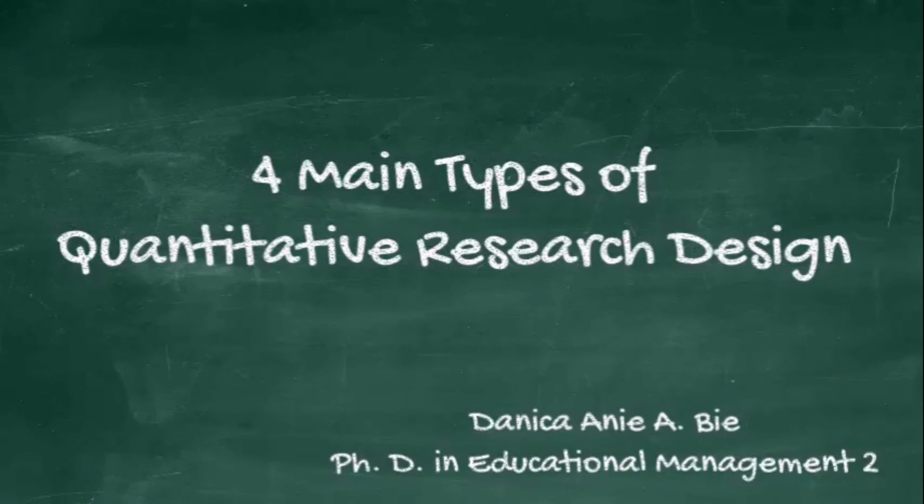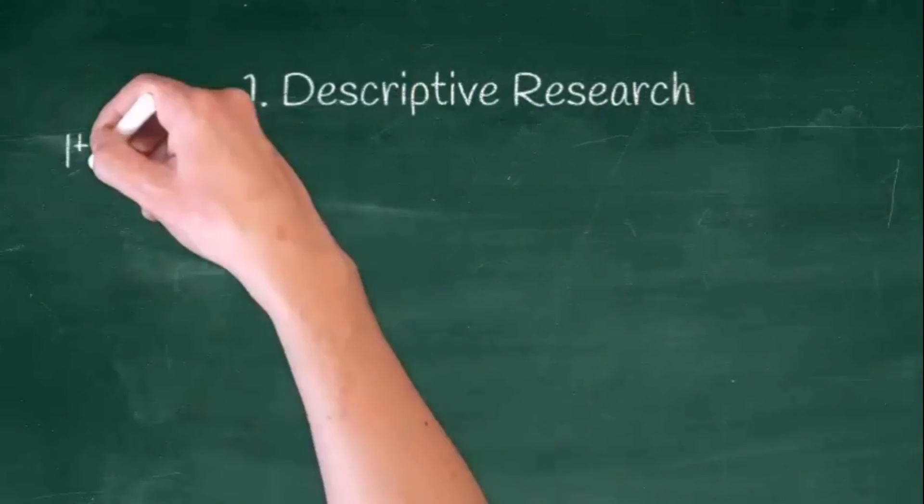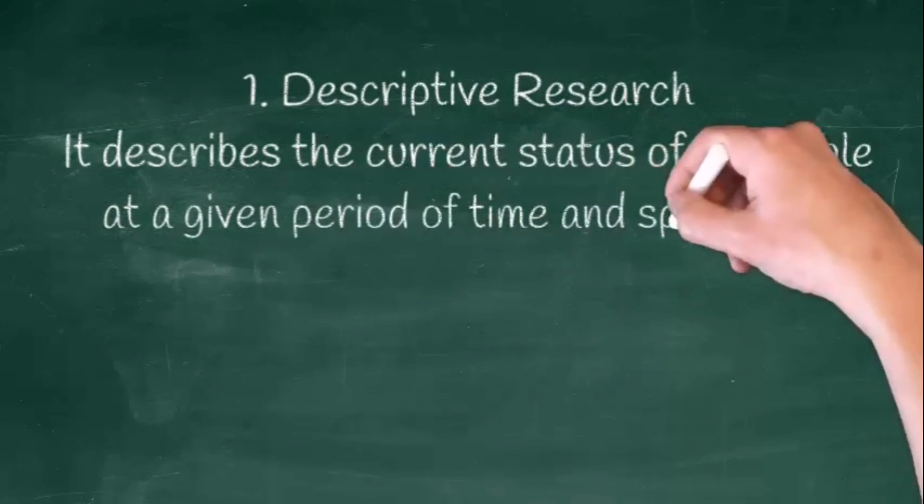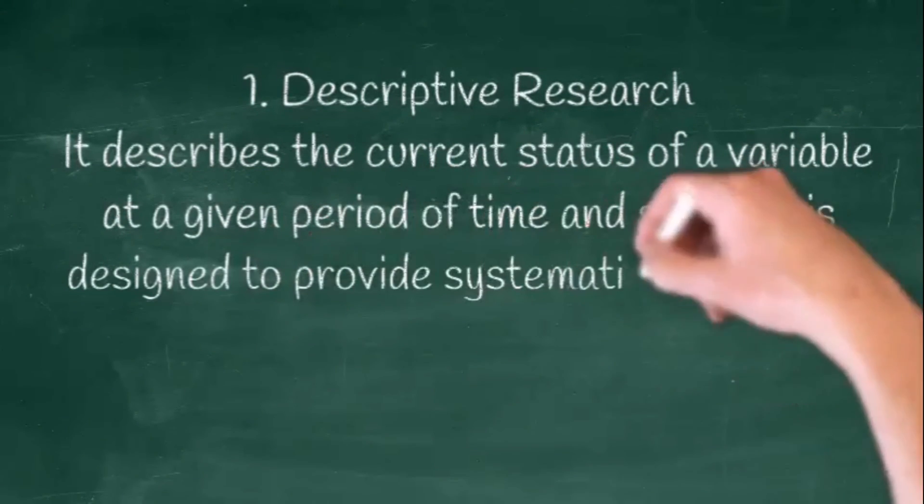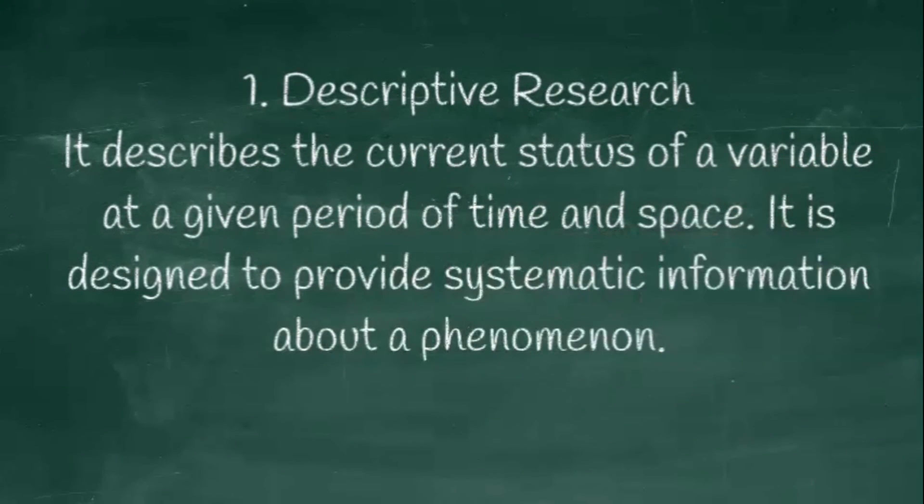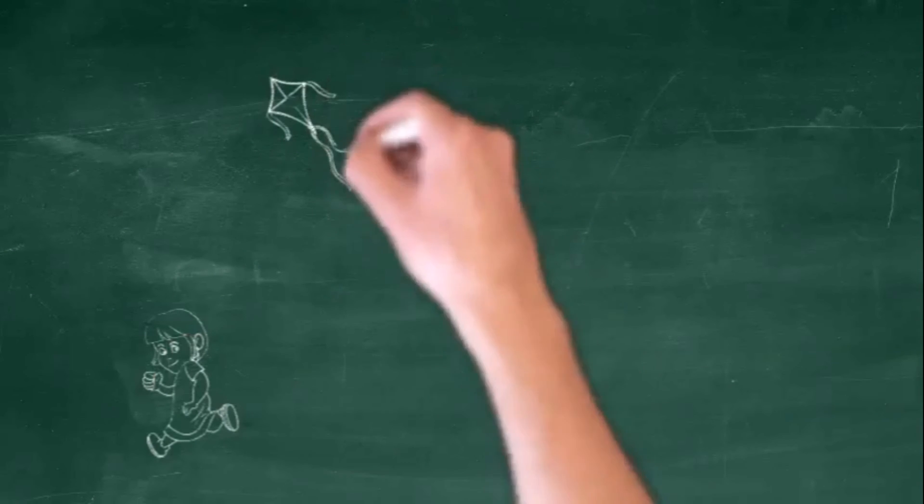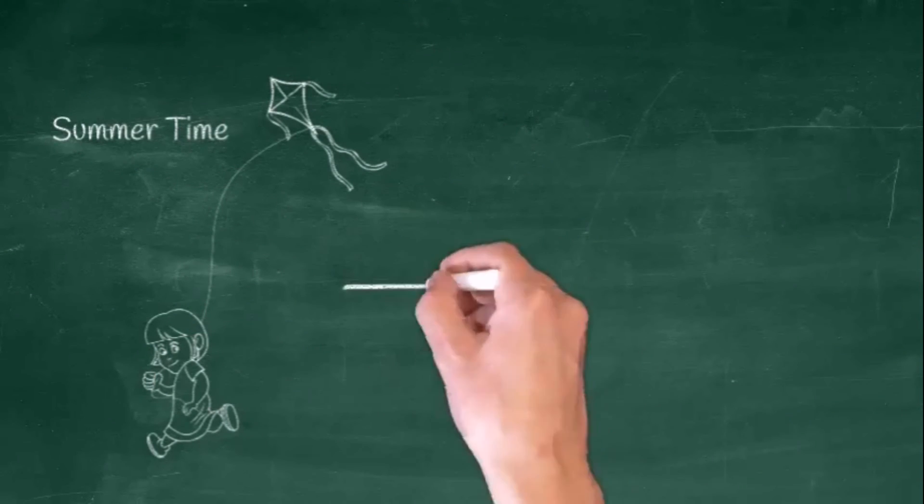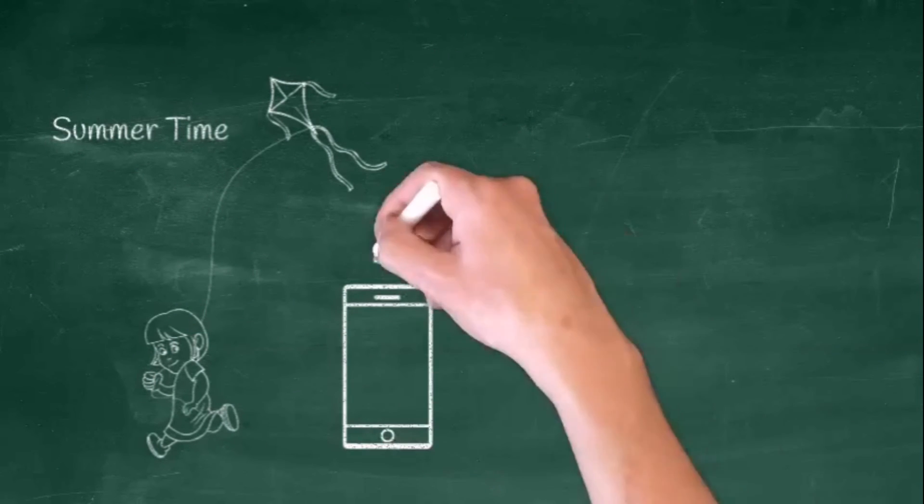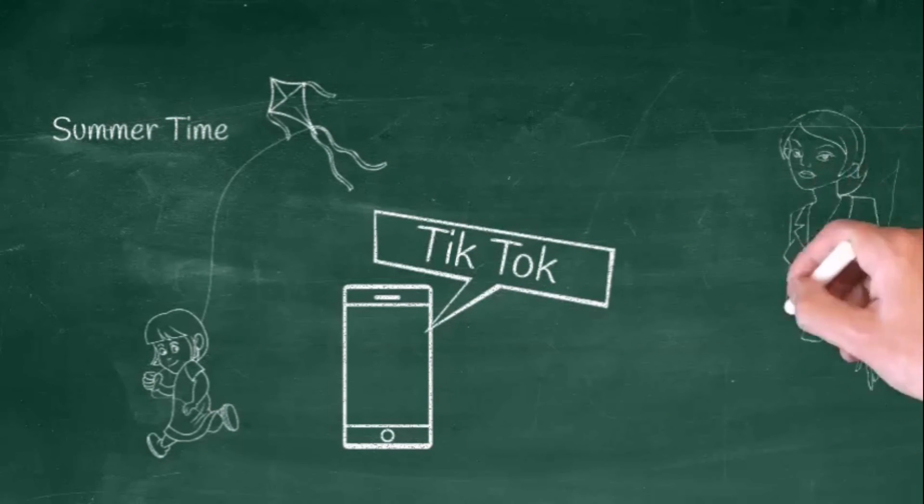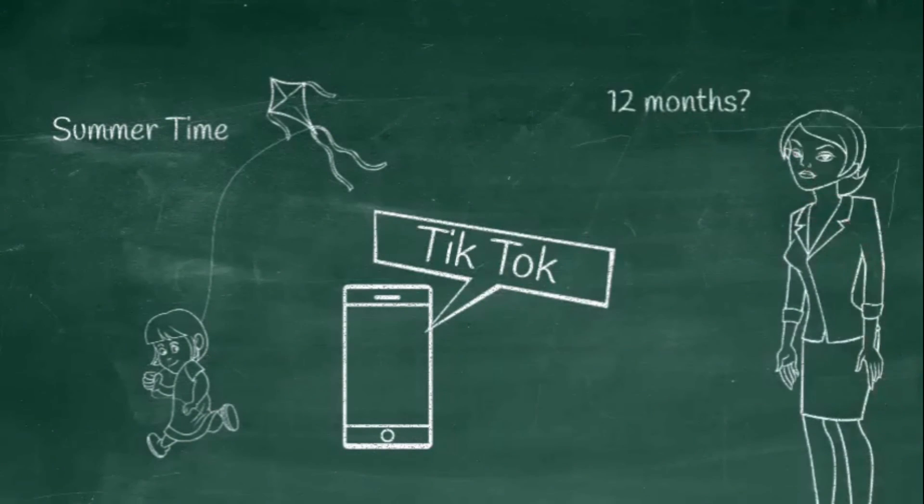For research designs in a quantitative method, first we have descriptive research. This describes the current status of a variable at a given period of time and space. It is designed to provide systematic information about a phenomenon. One example of a descriptive research design is gathering information about the description of how second grade students spend their time during summer vacation.